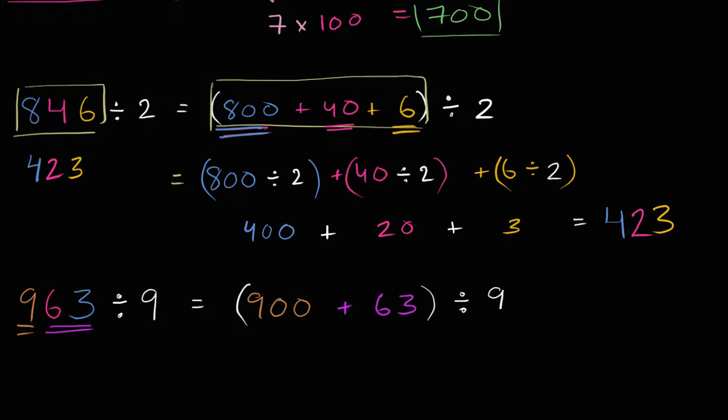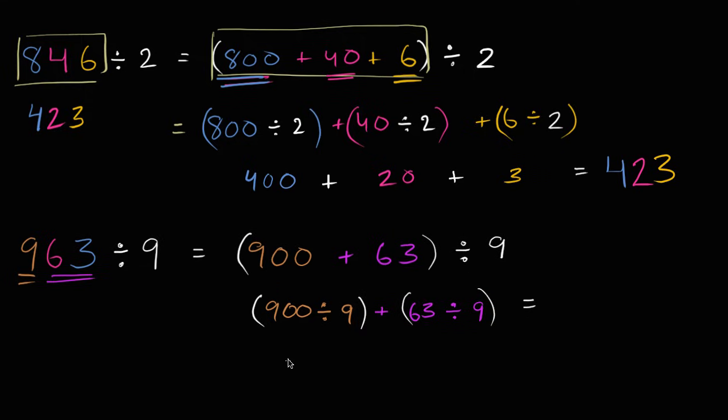Well, this is going to be the same thing as 900 divided by 9 plus 63 divided by 9. I just distributed the division by 9. Let me put some parentheses around this. And what is this going to be equal to? Well, 900 divided by 9 is 100. This is going to be 100. And 63 divided by 9 is 7. So, this is going to be 100 plus 7, or 107.